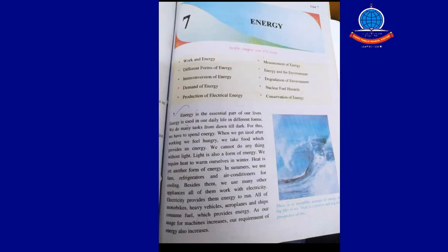We take food which provides us energy. Our body gets energy from the food we eat — carbohydrates, proteins, and fats. These are CHO compounds, and when they are broken down, they also produce energy. That energy we use in our daily routine.